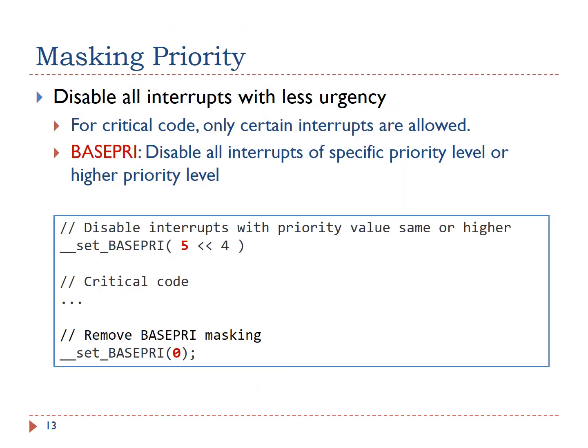In embedded systems, we often have to perform critical operations where data should not be corrupted by other interrupts. We need to disable all interrupts with less urgency to ensure that critical code will not be interrupted. We can use the Base Priority Mask Register to achieve this protection. For example, we disable all interrupts with a priority value of 5 or higher, and after executing the critical code, we reset the base priority register to 0 to remove the masking.